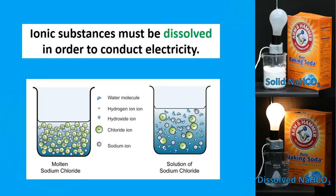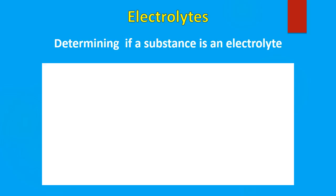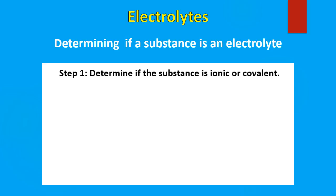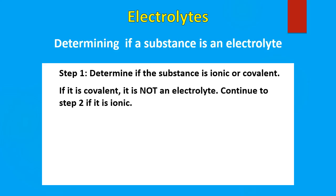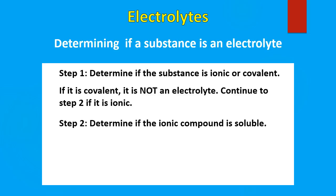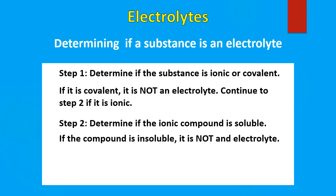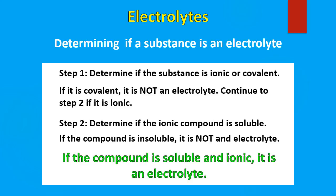How do we determine if a substance is an electrolyte? First, is the substance ionic or covalent? If it is not ionic — meaning it's covalent — it's a non-electrolyte. If it is ionic, we look at the next step: is the compound soluble or insoluble? If it's insoluble, it's a non-electrolyte. If it's soluble, it is an electrolyte. So it must be ionic and soluble to be an electrolyte.